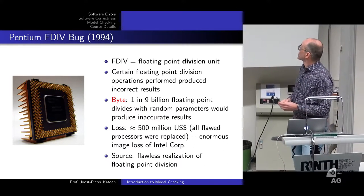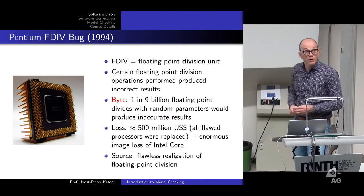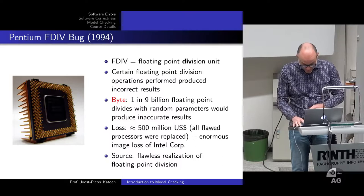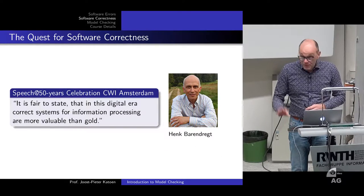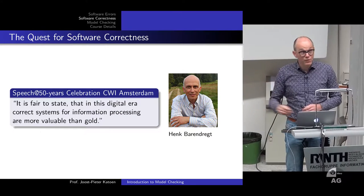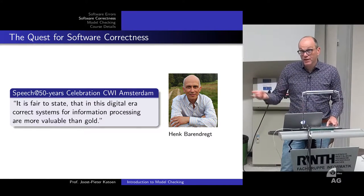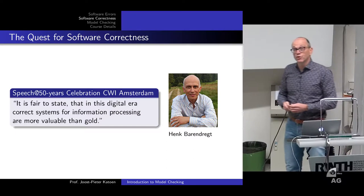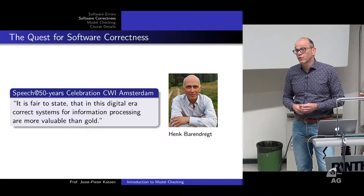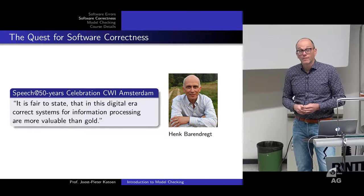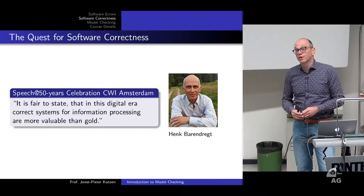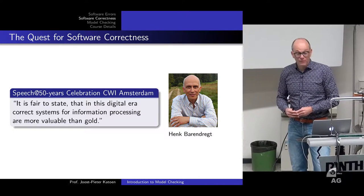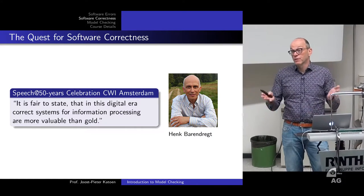The source was the realization of the floating-point division, which was not doing exactly what it was supposed to do. These examples already show that software correctness is simply important. People don't realize that if you buy a washing machine nowadays, one megabyte of software is not an exception — most of the bugs in a washing machine nowadays are actually bugs in software.